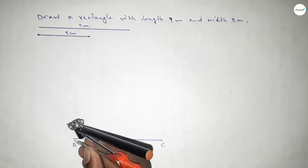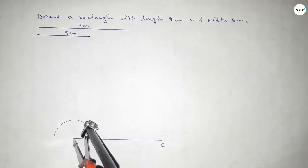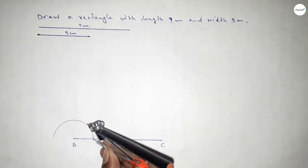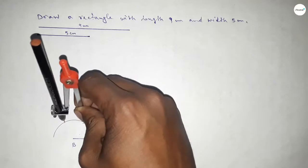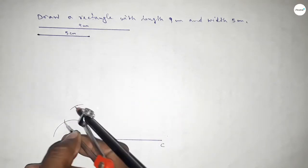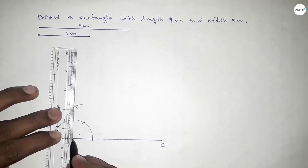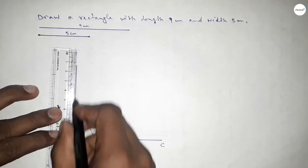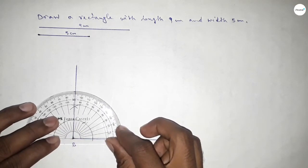Now we have to draw a 90 degree angle on point B. Putting the compass on point B, taking any length and drawing an arc. With the same length, putting the compass and cutting arcs at two positions. Drawing arcs so both curves intersect at a point, then joining this side to get a 90 degree angle.